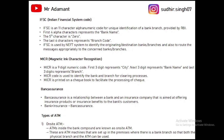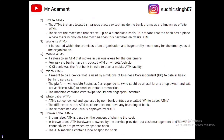Next, we will discuss the types of ATMs. The first type is on-site ATM, which is installed within the campus of a bank branch — if the ATM is installed in the compound of the branch, it is called an on-site ATM. Next is off-site ATM, which is the opposite — the ATM is installed on a standalone basis where there is no branch.